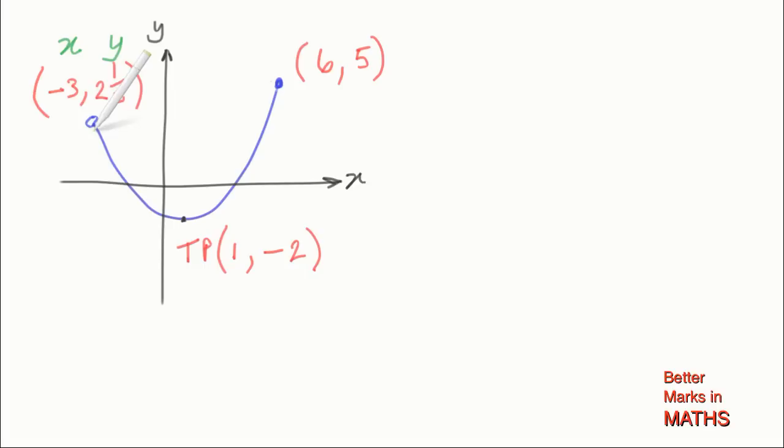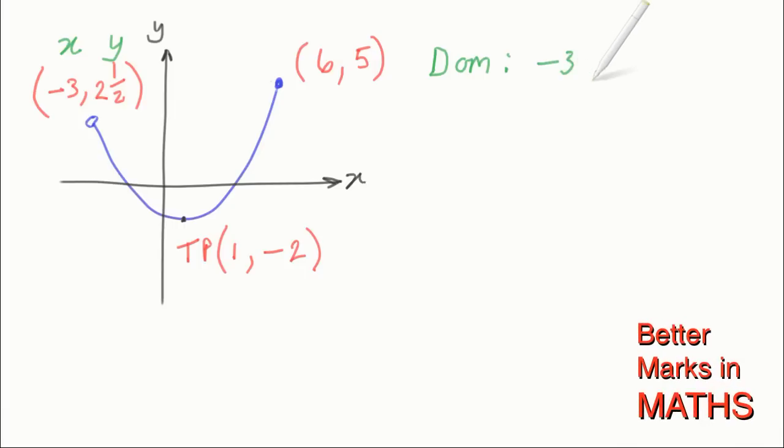That means that the lowest x value on this graph is in fact minus 3. So there's the first part of the domain, minus 3, and the highest x value is the x value at this point, which happens to be 6. And once again, the first value in an ordered pair like this is the x value, and the second one is the y value, and that value there is 6.